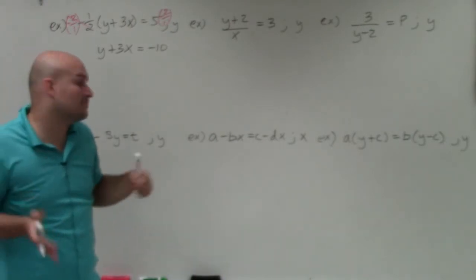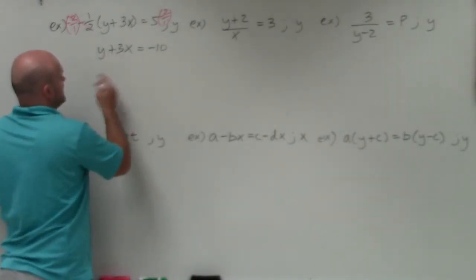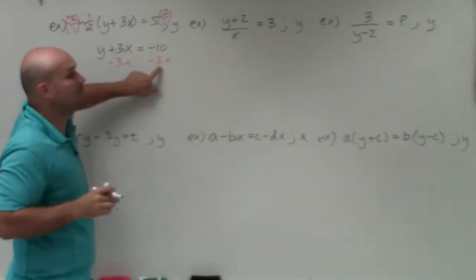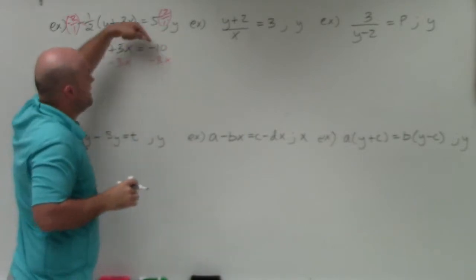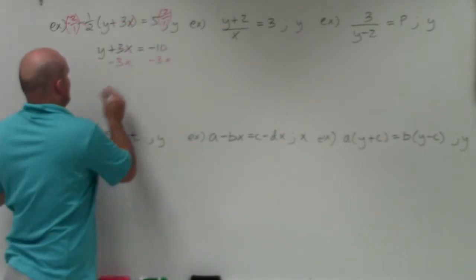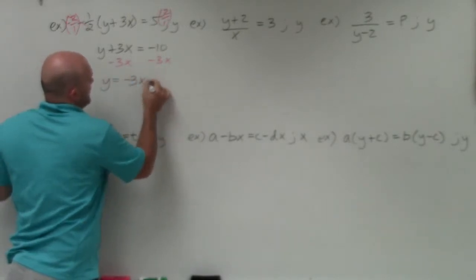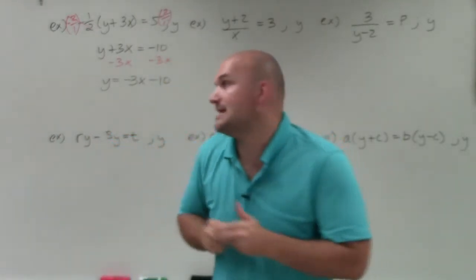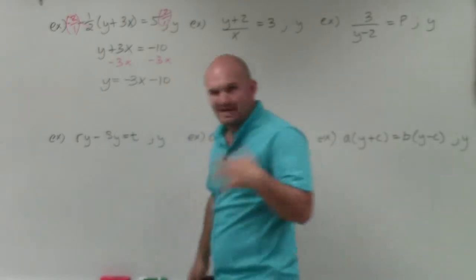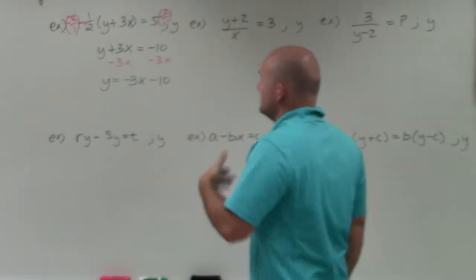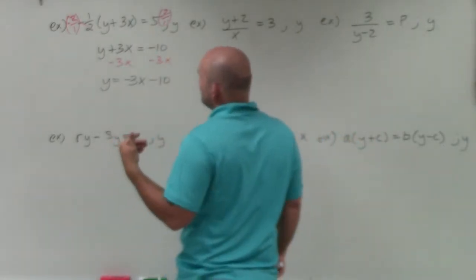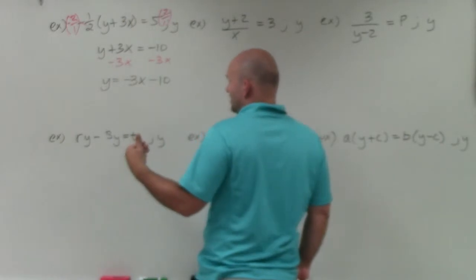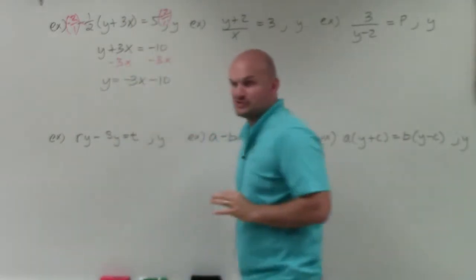Now I can simply use my inverse operations to solve for y. My y is being added by 3x, so to undo that I subtract 3x on both sides. My final answer is y equals negative 3x minus 10. Whenever we're dealing with fractions, we like to get rid of them — that's why I multiplied by the reciprocal on both sides instead of distributing and dealing with fractions.